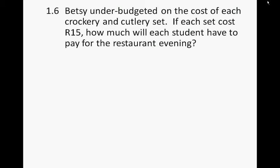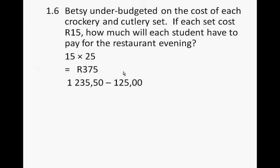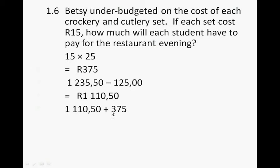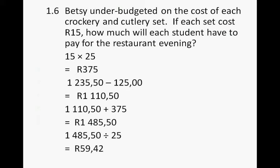Betsy underbudgeted on the cost of each crockery and cutlery set. If each set costs 15 rand, how much will each student have to pay for the restaurant evening? 15 times 25 is 375. You subtract the original cutlery budget, giving 1,110 rand 50 cents, then add the new 375 rand, amounting to 1,485 rand 50 cents. Divide that by 25, and you get 59 rand 42 cents.